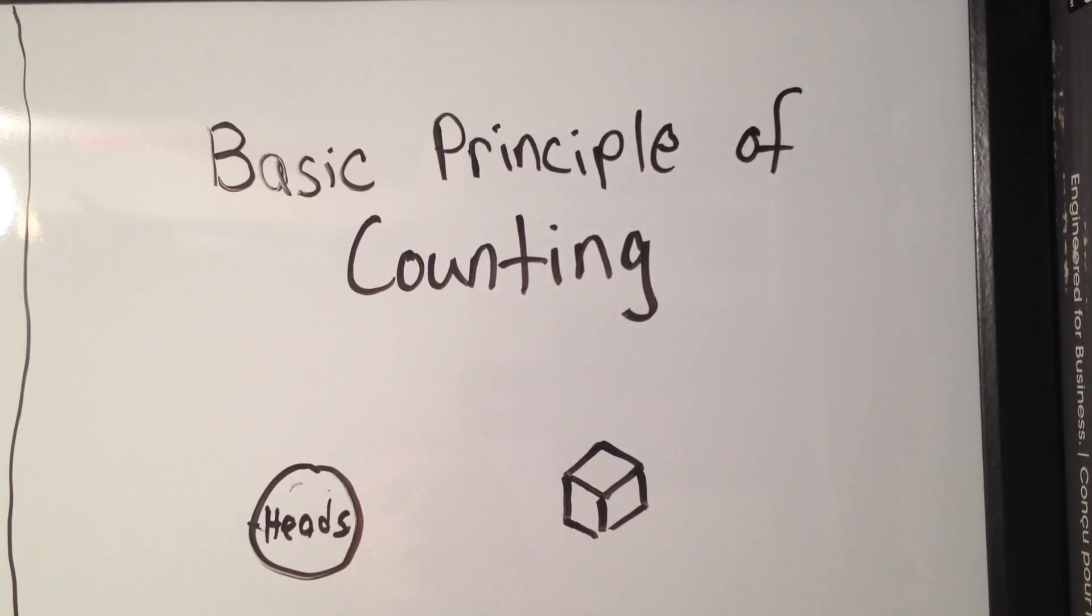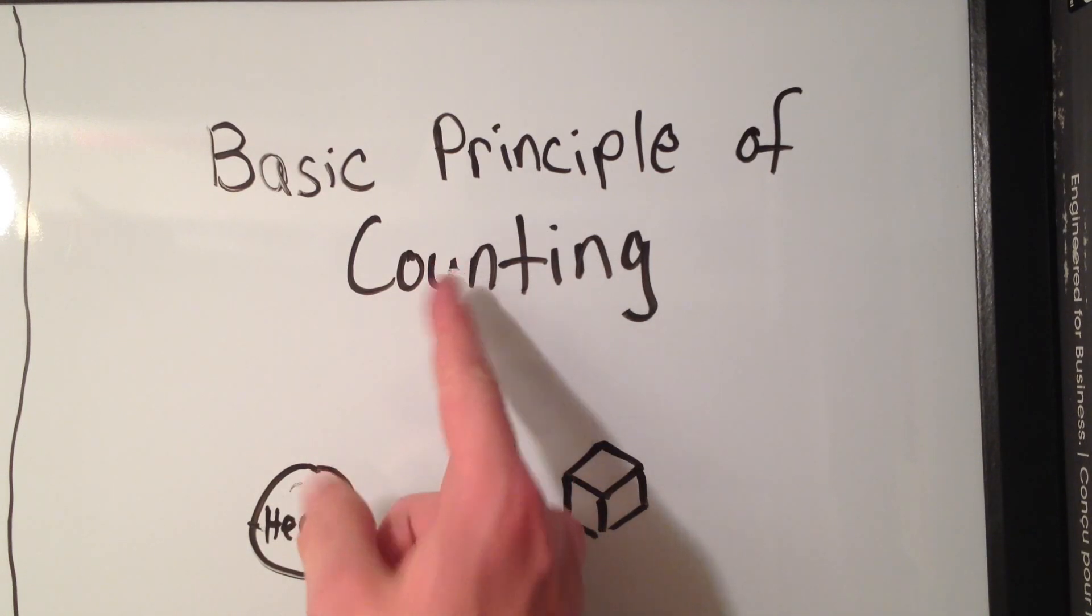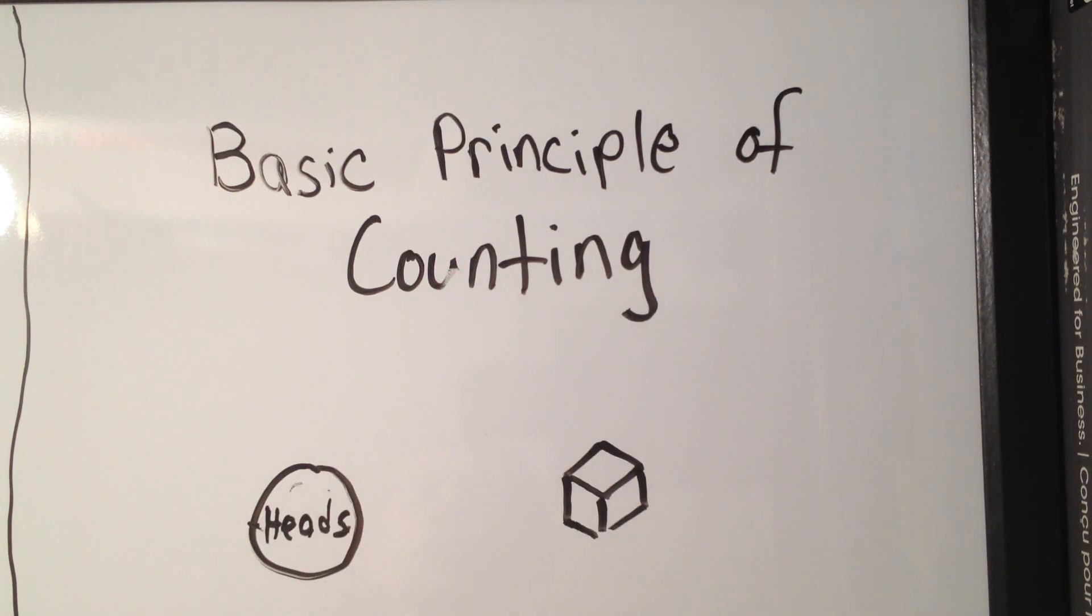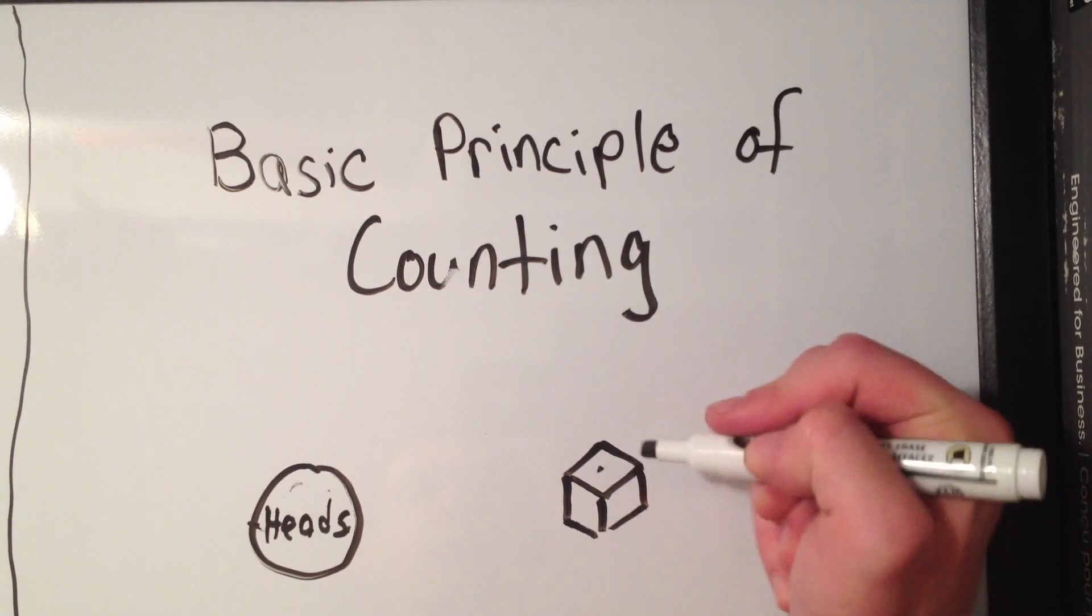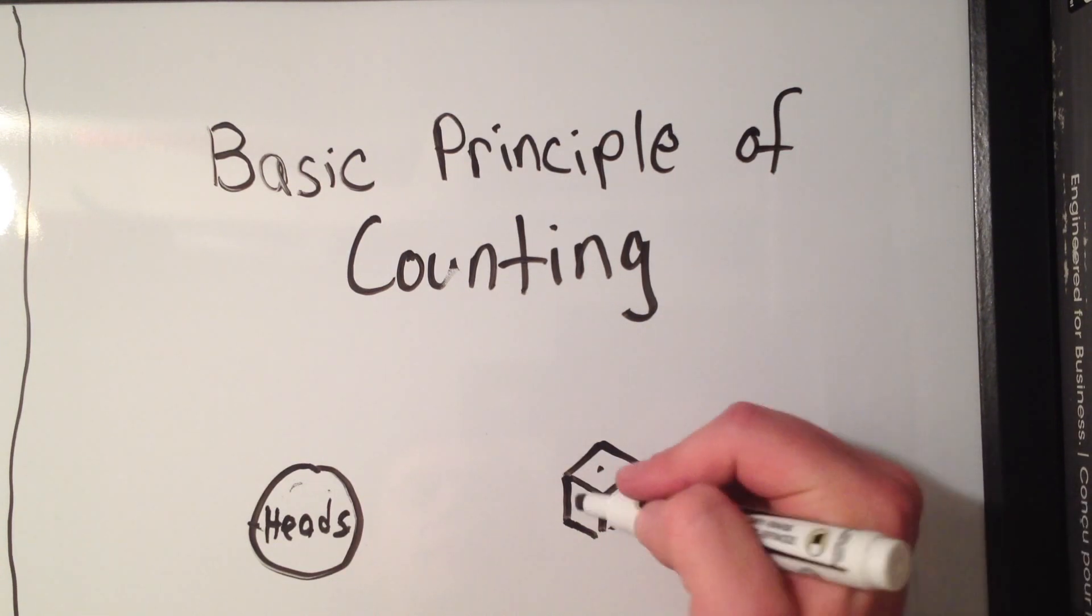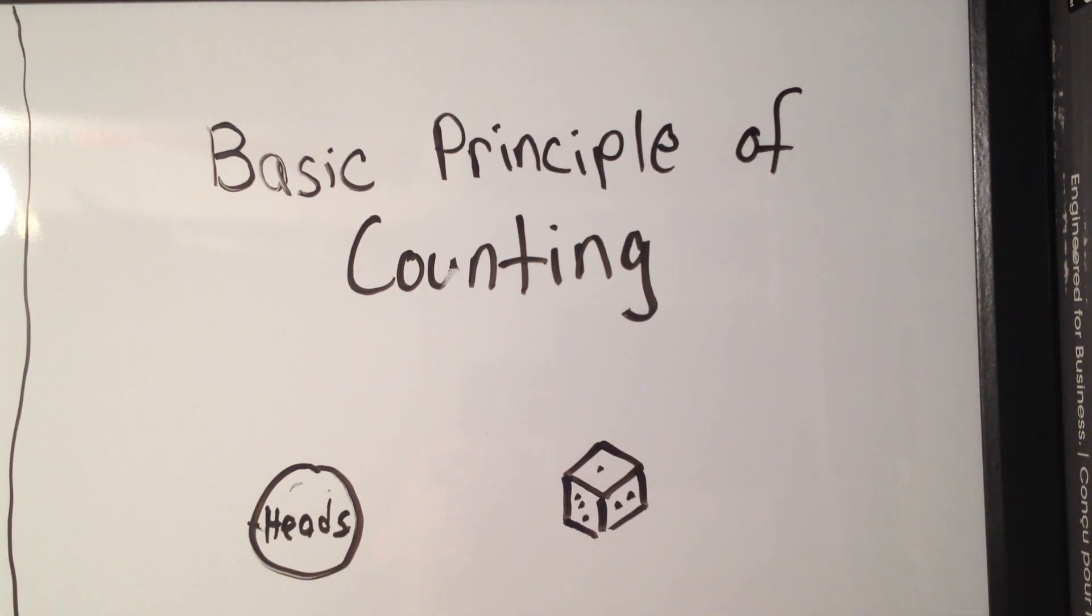So I want to talk about a number of ways to count things and what the basic principle of counting is. So say you had two events here, like you wanted to flip a coin and you wanted to roll my crude drawing of a six-sided die. I don't think that the dots would actually be like that on the die anyway.